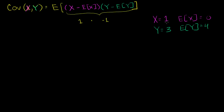What is that telling us? At least for this sample — this one time that we sampled x and y — x was above its expected value when y was below its expected value. If this happened across the entire population, it would make sense that they have a negative covariance: when one goes up, the other goes down. If they both go up together, they would have a positive covariance. The degree to which they do it together tells you the magnitude of the covariance.